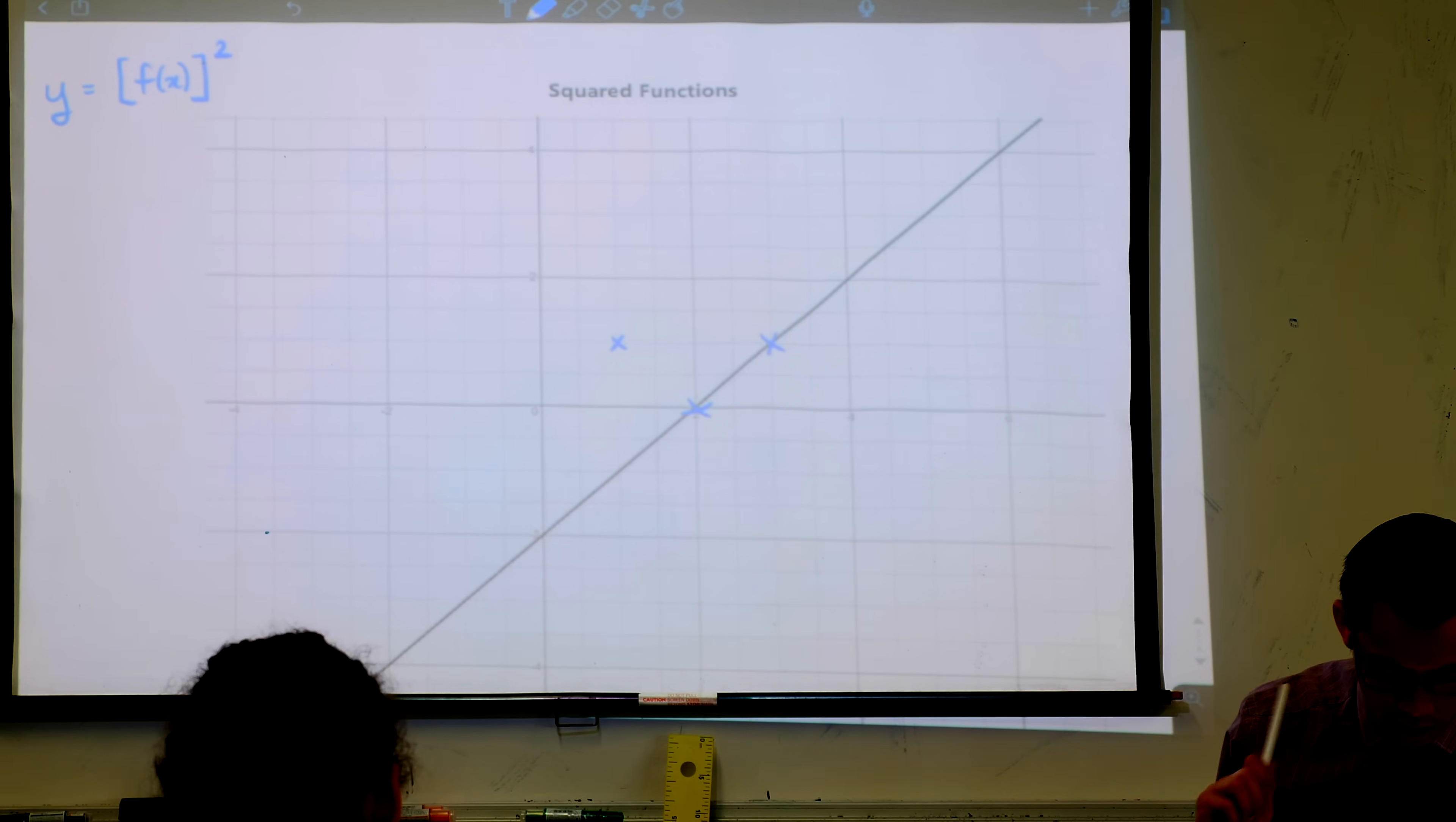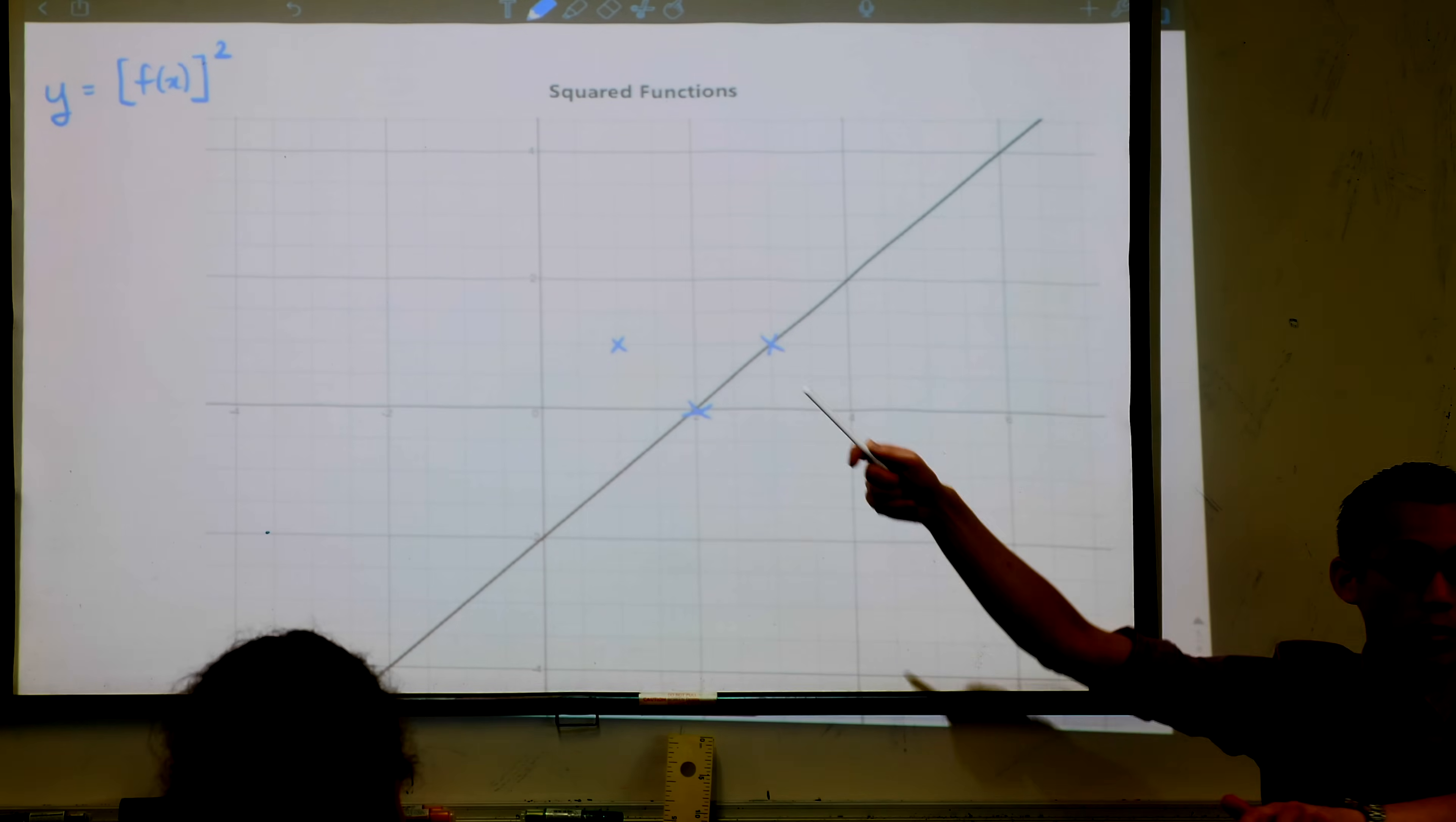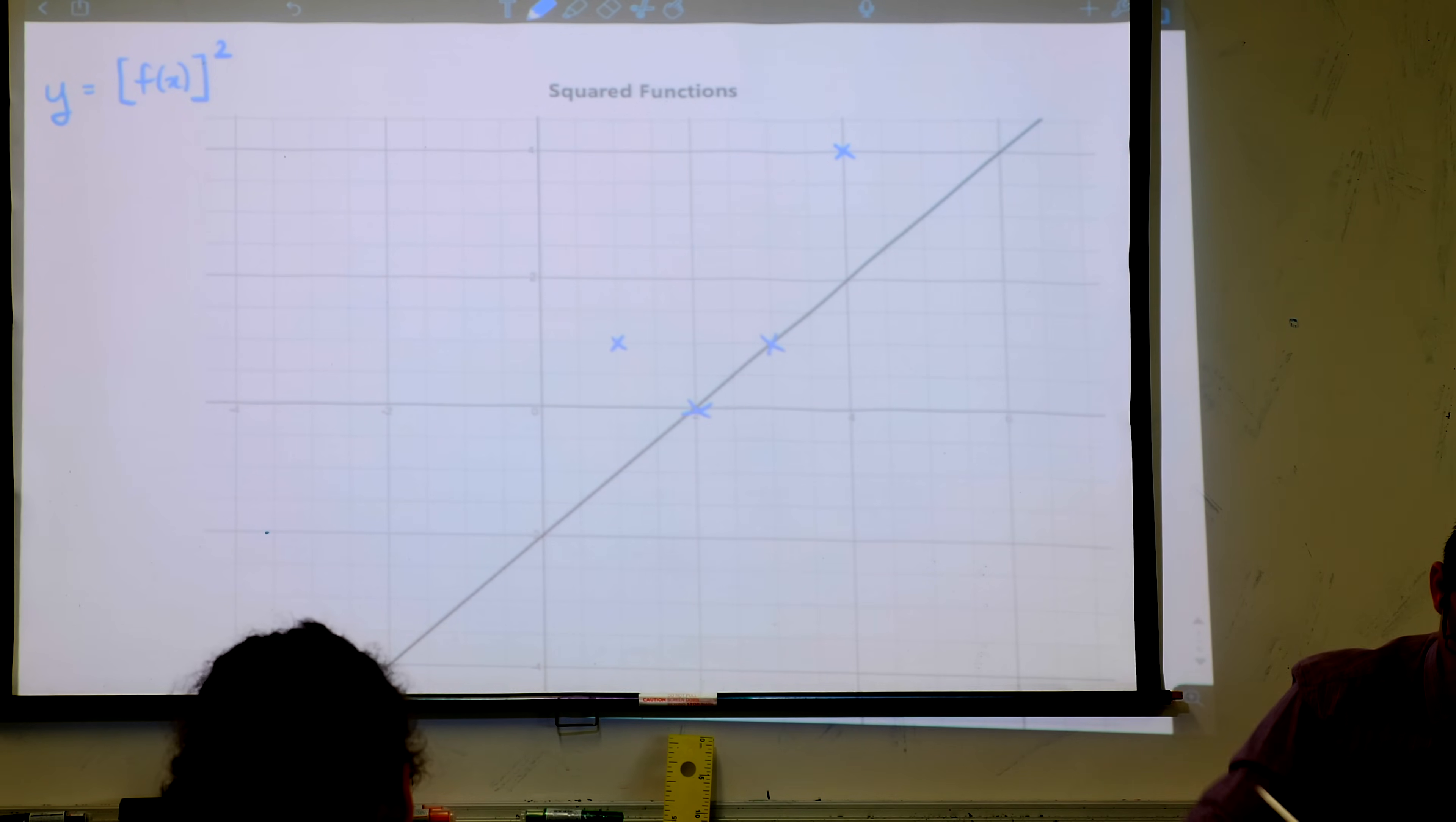Let's just do a couple more values. When x equals 4, y is equal to 2. So what's the square of 2? It's 4, right up there. There's a spot down at the bottom, it's actually the y-intercept, y equals negative 2. So when you square negative 2, you also get 4.